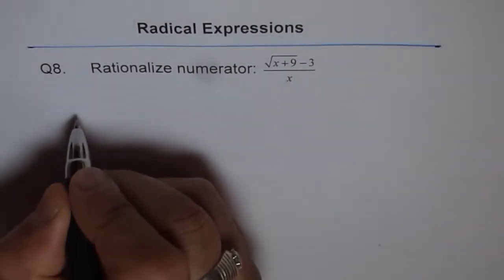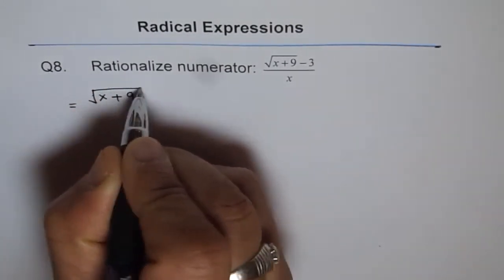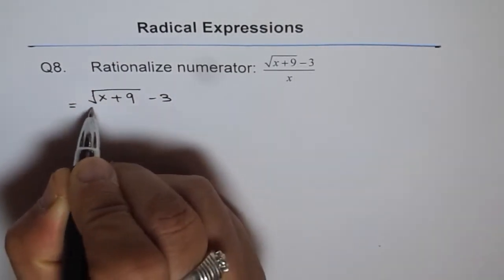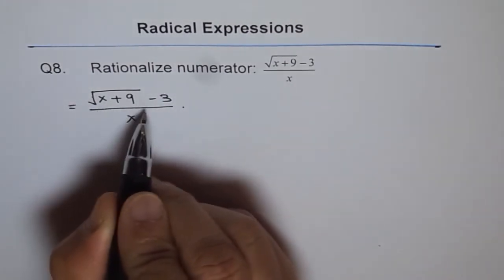We can write this as equal to square root of x plus 9 minus 3 divided by x times, we will multiply and divide by its conjugate.